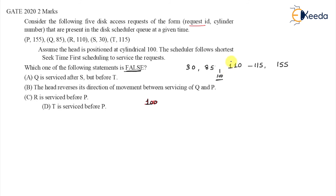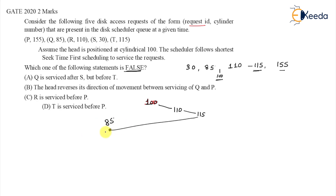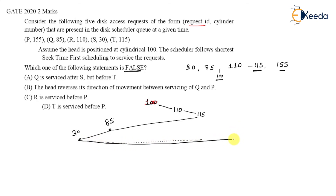Using SSTF with head at 100, the sorted order is: 30, 85, 110, 115, 155. The shortest distance from 100 is 10, so we service 110 first. Then 115, then the next nearest is 85, then 30, and finally 155 is the last request.